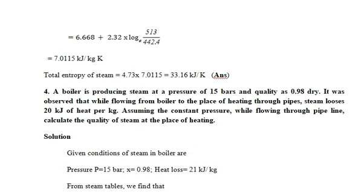The last numerical for today's session: A boiler is producing steam at a pressure of 15 bar and quality of 0.98 dry. It was observed that while flowing from the boiler to the place of heating through pipes, steam loses 20 kJ of heat per kilogram. Assuming constant pressure while flowing through the pipe, calculate the quality of steam at the place of heating.